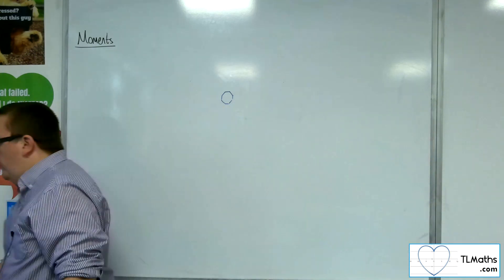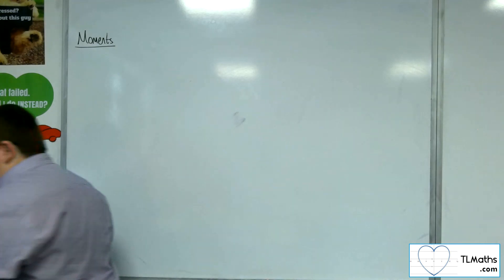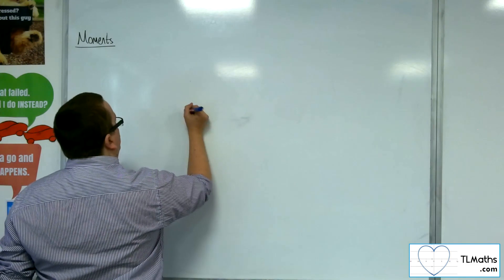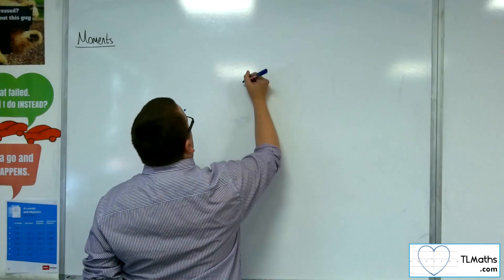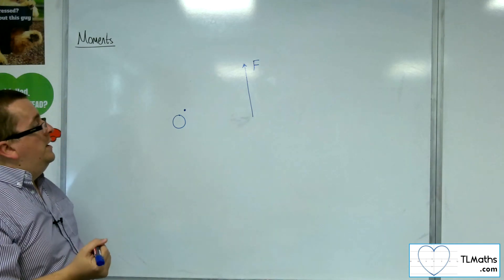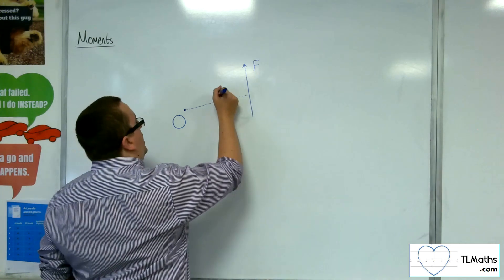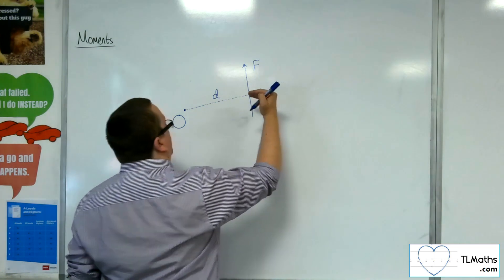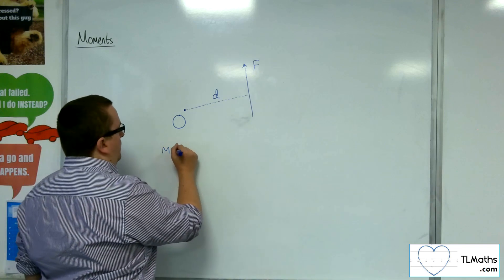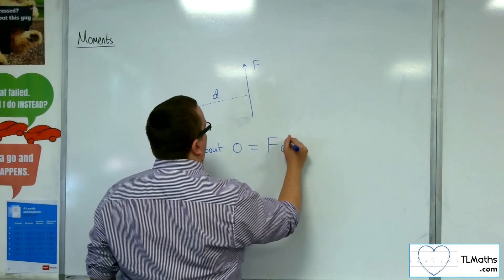So this idea of a moment being measured is what we are interested in, this turning effect. So if you've got a point, let's call it O, and you've got a force being applied, call that F, then the moment is the force times by the perpendicular distance from the force to the point that you're measuring the moment around. So the moment about O is equal to the force times the distance.